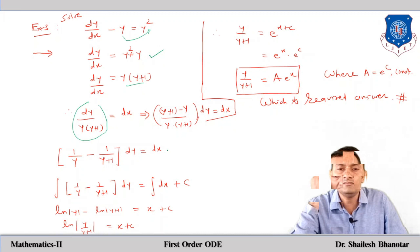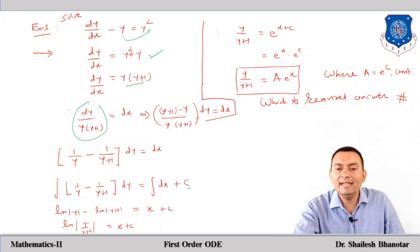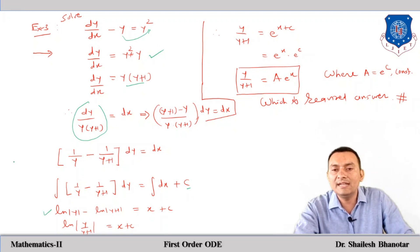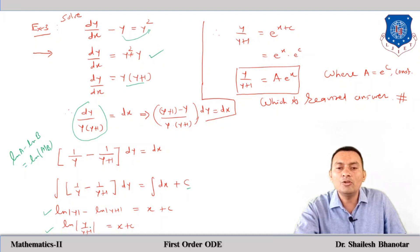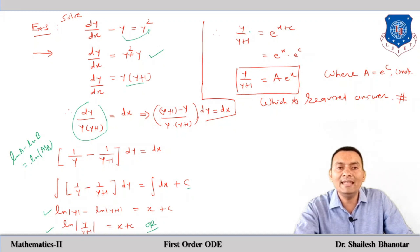Integrating both sides: ∫[1/y − 1/(y+1)] dy = ∫dx + C, which gives ln|y| − ln|y+1| = x + C. Using the logarithm property ln a − ln b = ln(a/b), we get ln|y/(y+1)| = x + C. This is one form of the general solution.